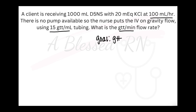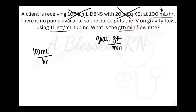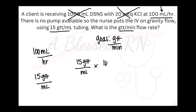Once again, our goal is drops on the top and minutes on the bottom. Our puzzle pieces need to be volume over time. We have several things here, but we already have a piece that has volume and time together. We're not looking for mEq, and we don't need the total bag volume of 1,000 mL. So we'll use our rate: 100 mL per hour — time on the bottom, volume on the top. And then we have our drop factor, which is 15 drops per mL.